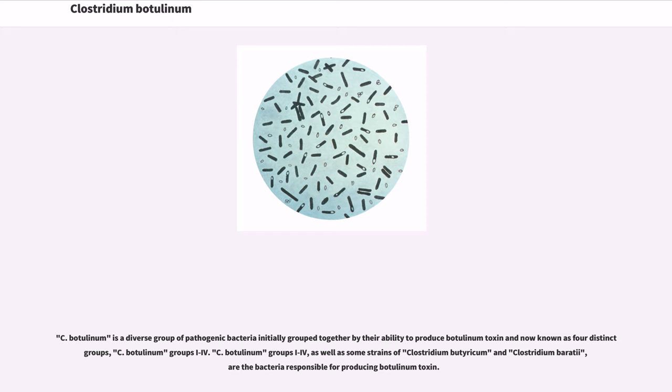C. botulinum is a diverse group of pathogenic bacteria initially grouped together by their ability to produce botulinum toxin and now known as four distinct groups. C. botulinum group I through IV, as well as some strains of Clostridium butyricum and Clostridium baratii, are the bacteria responsible for producing botulinum toxin.